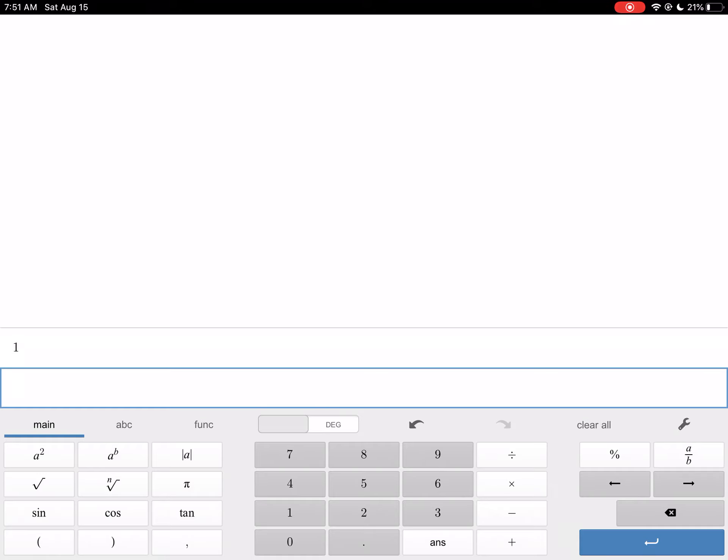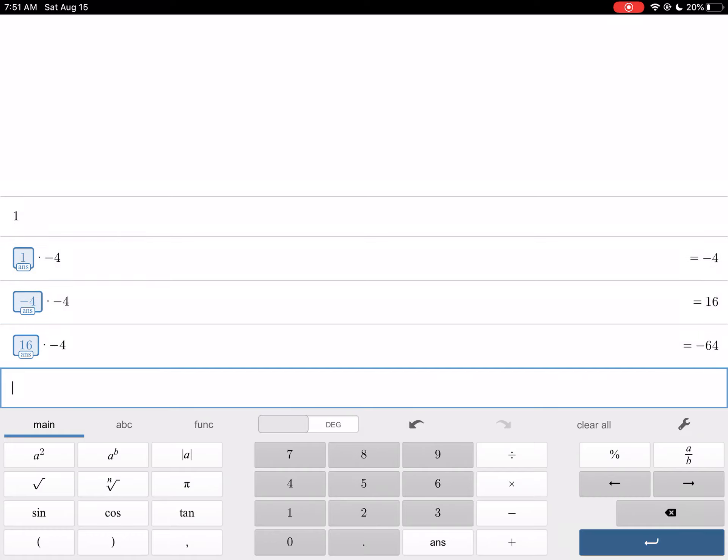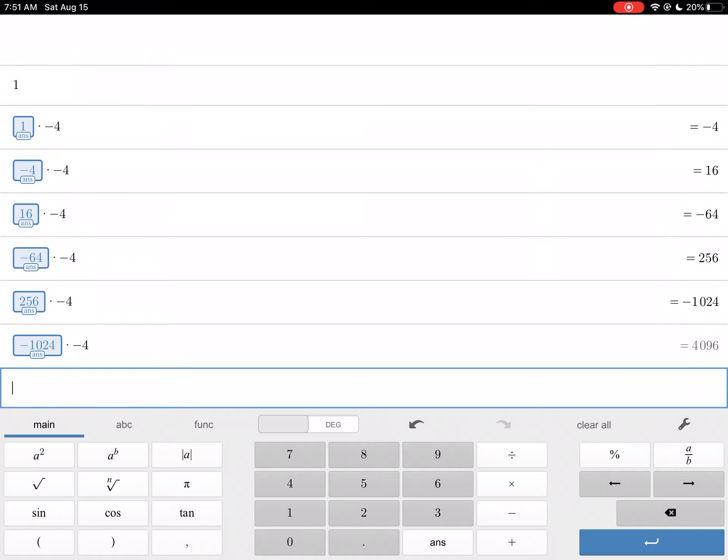Then we're going to type in answer times your common ratio times negative four. And we get negative four. Now if you press enter, now just press enter again. Then there is your third term, your fourth term. There's our three terms we have: 256, negative 1024, and 4096. That's using the answer button on your calculator.